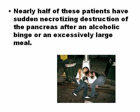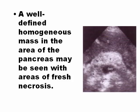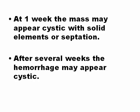Nearly half of patients with acute pancreatitis have an episode after an alcoholic binge or an excessively large meal. A specific sonographic finding depends on the age of the hemorrhage. A well-defined mass can be seen at the beginning of necrosis — you can see here the echogenic area that is the beginning of the necrosis. At one week the mass may appear cystic with solid elements, like a complex cyst. After several weeks the hemorrhage may appear totally cystic.